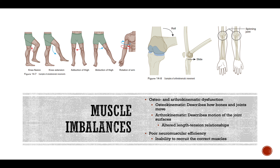Arthrokinematic dysfunction involves improper joint movement. To clarify the terminology: osteokinematic describes how bones and joints move, while arthrokinematic describes the motion of the joint surface — roll, slide, and spin are arthrokinematic motions. Adduction, extension, and flexion, for example, are osteokinematic motions.